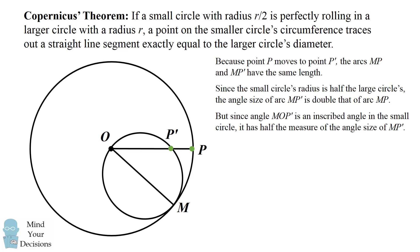So we put all this together and we're going to get the following series of equations. We have the angle MOP' which is equal to half the angle size of the arc MP'. That's by the inscribed angle theorem.